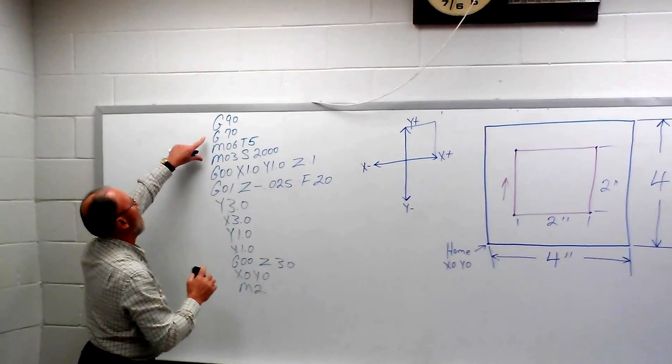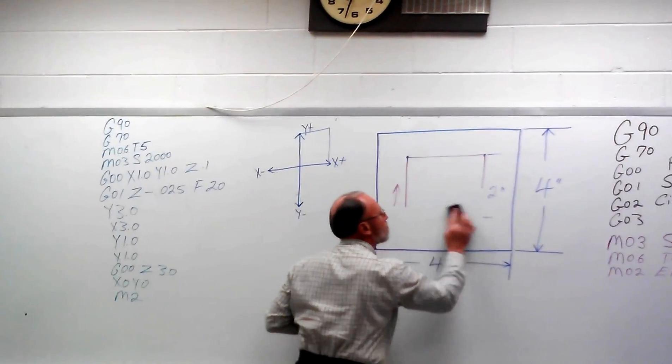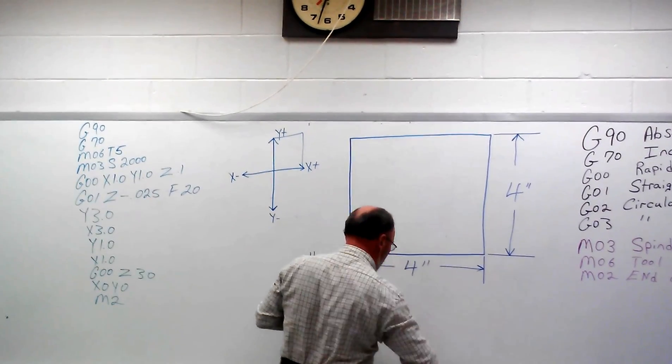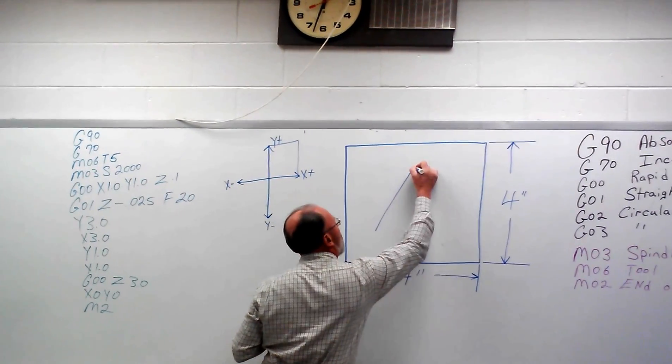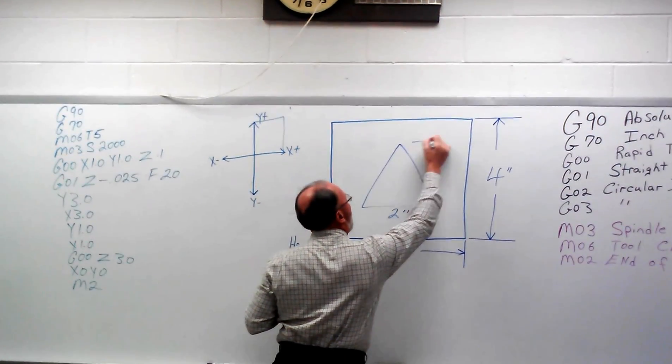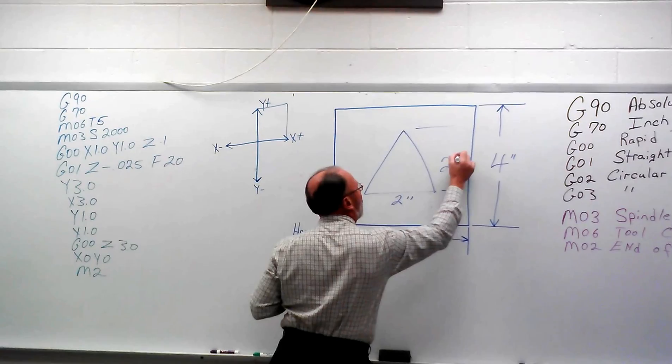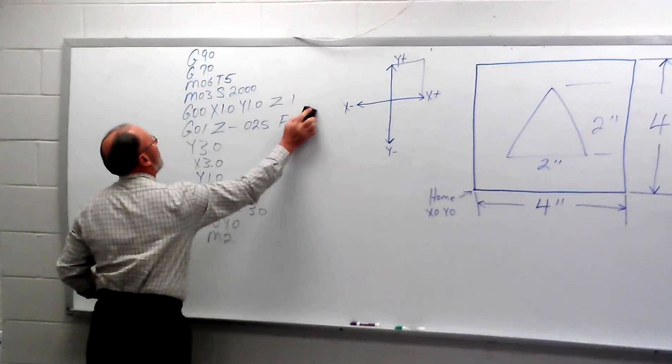Now, I'm going to leave all this information here because the next thing we're going to do is a triangle. And a triangle, there's nothing different about it except for we've got a little bit of an angular movement. This is still going to be 2 inches wide and 2 inches tall within a 4x4 block.